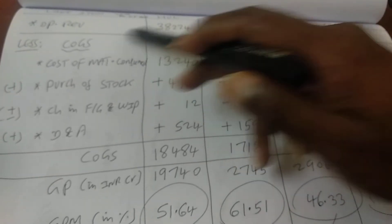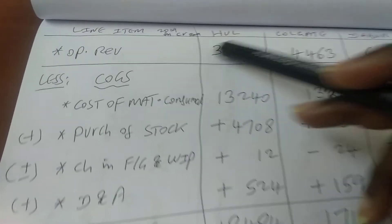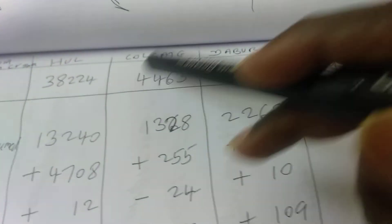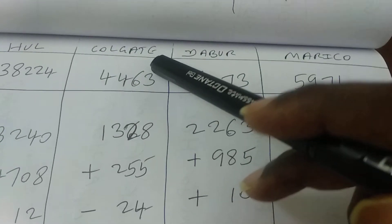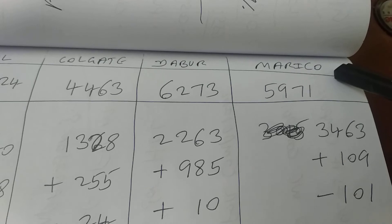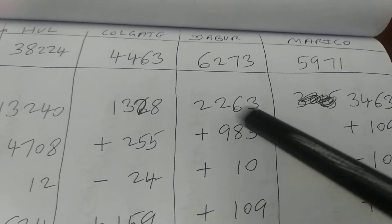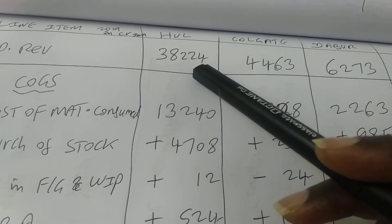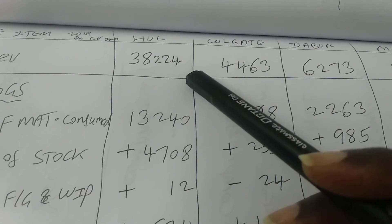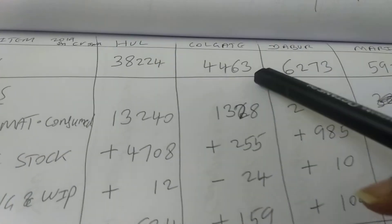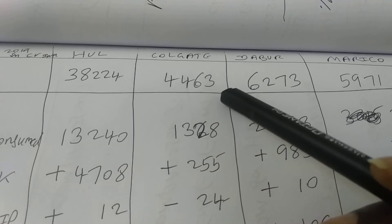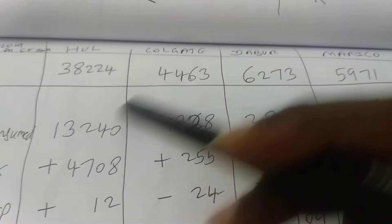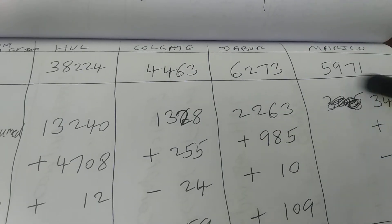Starting with the top line — operating revenue for all companies. HUL has operating revenue of ₹38,224 crores in 2019, whereas Colgate-Palmolive is only ₹4,463 crores — the smallest among the comparables. HUL is the biggest among the comparables. Dabur and Marico are roughly similar to each other. So needless to say, HUL is the largest firm here.